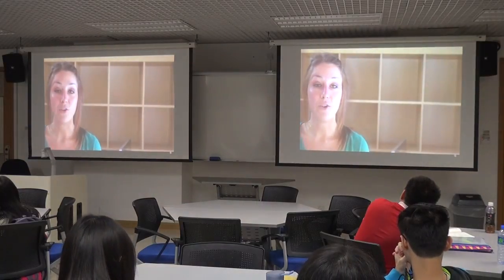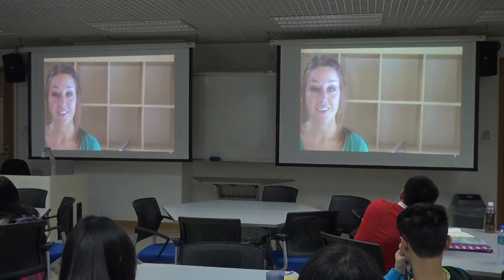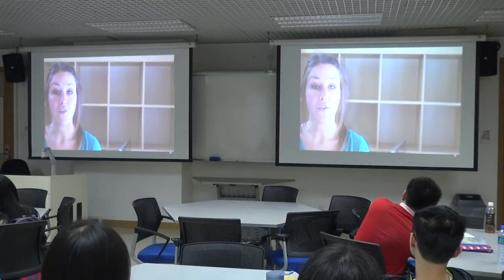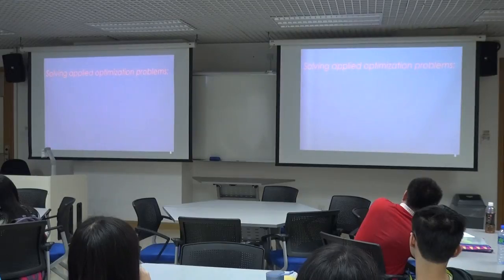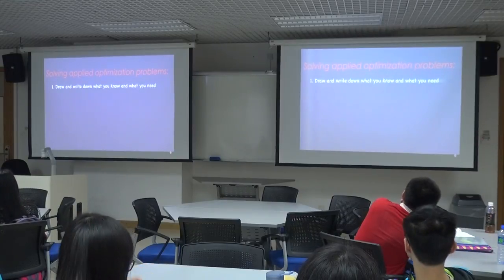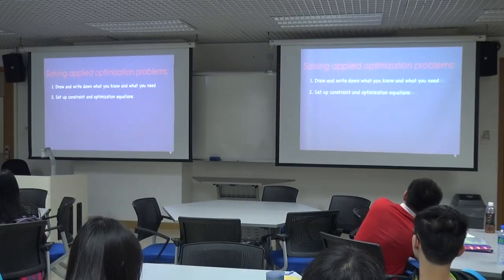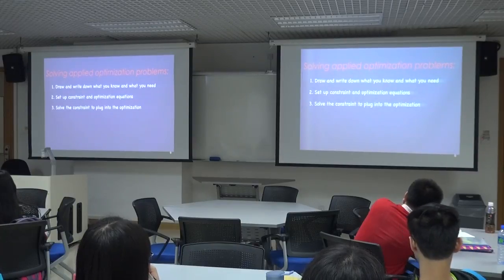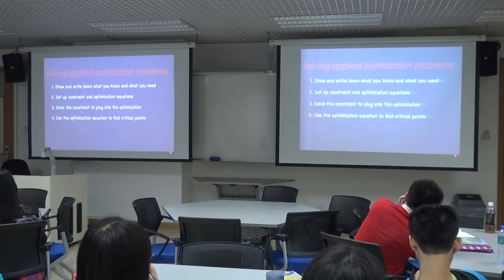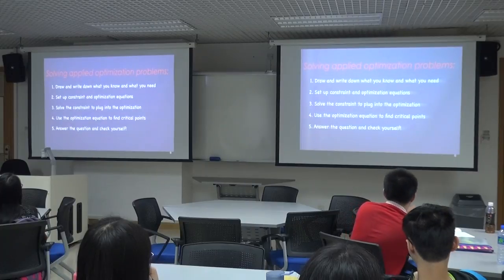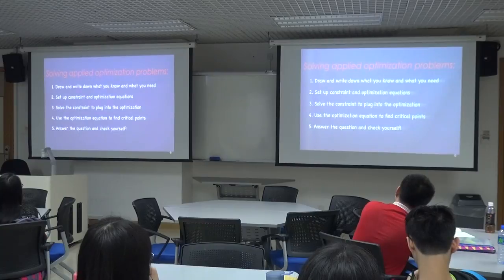Now that we've covered the basics of optimization, let's turn to applied optimization to see how this tool could be used in the real world. The steps to solve an applied optimization problem are: 1. Write down everything you've been given and exactly what you need to find. 2. Set up your equations — one for the constraint and one to optimize. 3. Solve the constraint equation for one variable so you can plug it into the optimization equation. 4. Take the derivative of the optimization equation to find your critical point. 5. Make sure to answer the question you were really asked, and use the first or second derivative test to double-check.